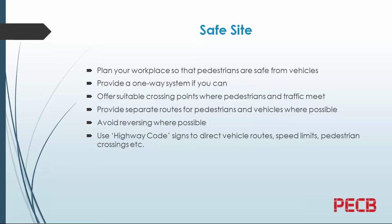Provide separate routes for pedestrians and vehicles where possible. Avoid reversing where possible, because accidents happen from forklifts reversing without looking. Use highway code signs to direct vehicle routes — speed limits, pedestrian crossings — so they know they're not supposed to be speeding once they enter your work environment, and pedestrians know exactly where to cross.